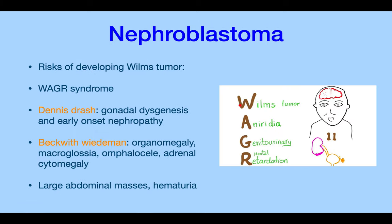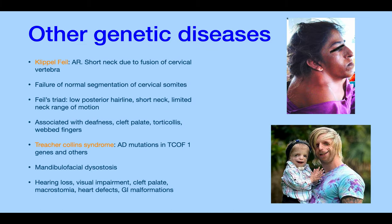Nephroblastoma (Wilms tumor) is a tumor of the nephrons. Associated syndromes include WAGR syndrome — Wilms tumor, aniridia, genitourinary problems, and mental retardation. Denys-Drash syndrome involves gonadal dysgenesis and early-onset nephropathy. Beckwith-Wiedemann syndrome presents with organomegaly, macroglossia, omphalocele, and adrenocortical cytomegaly. It also presents with large abdominal masses and hematuria.